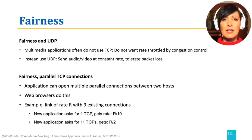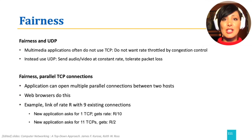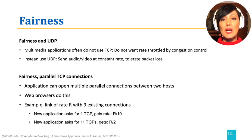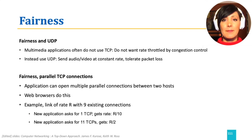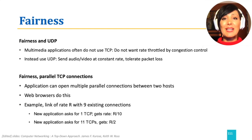However, if this new application asks for 11 TCP connections, it will gain 11 out of the 20 total connections over that link with capacity R, which is going to get it almost half of the bottleneck bandwidth.